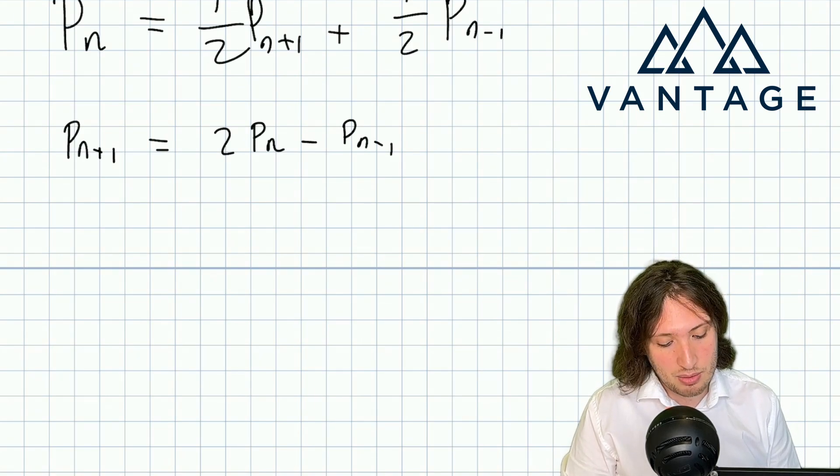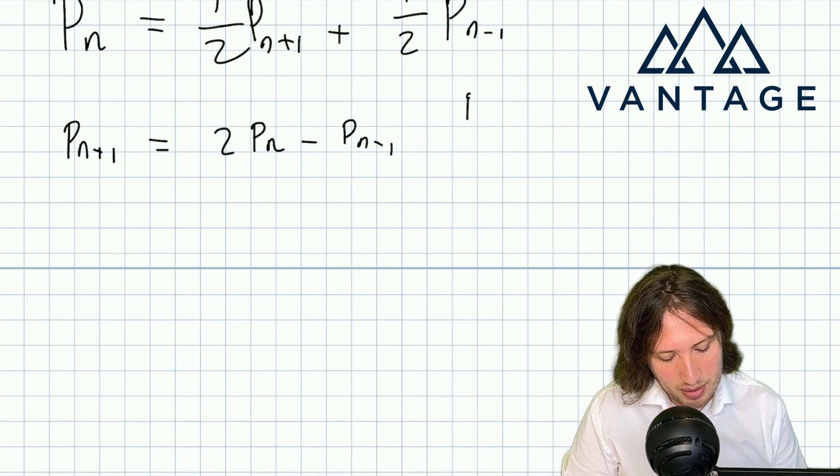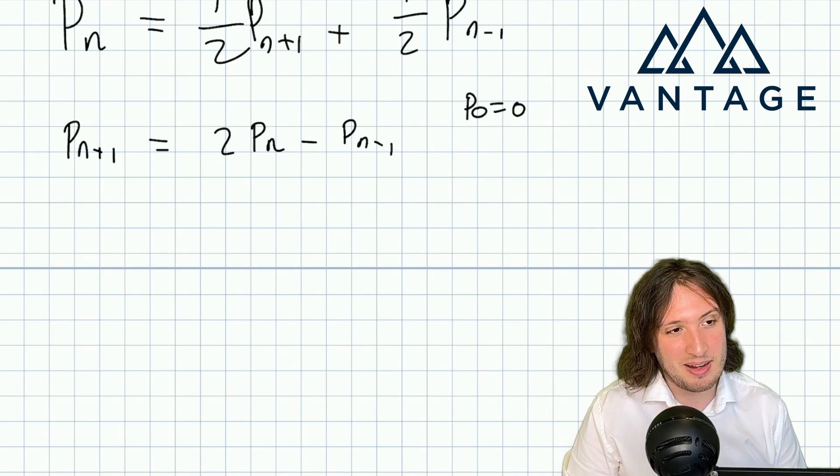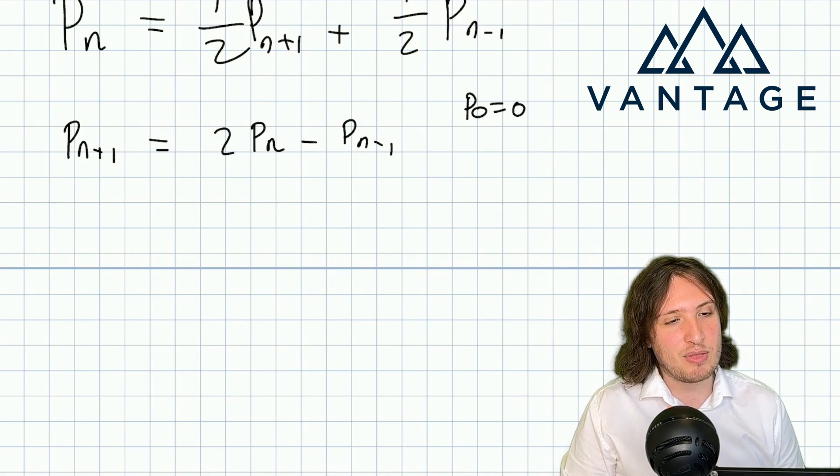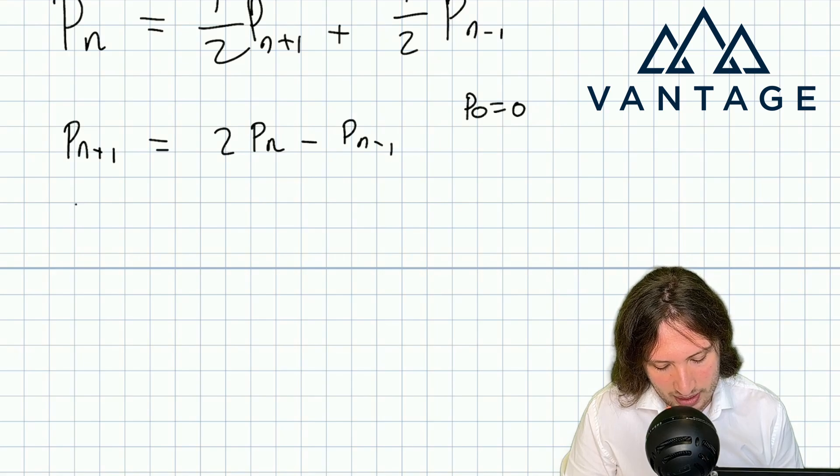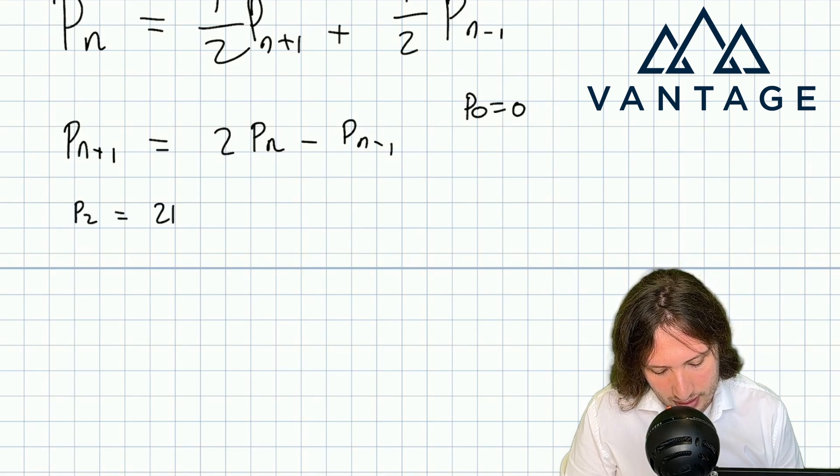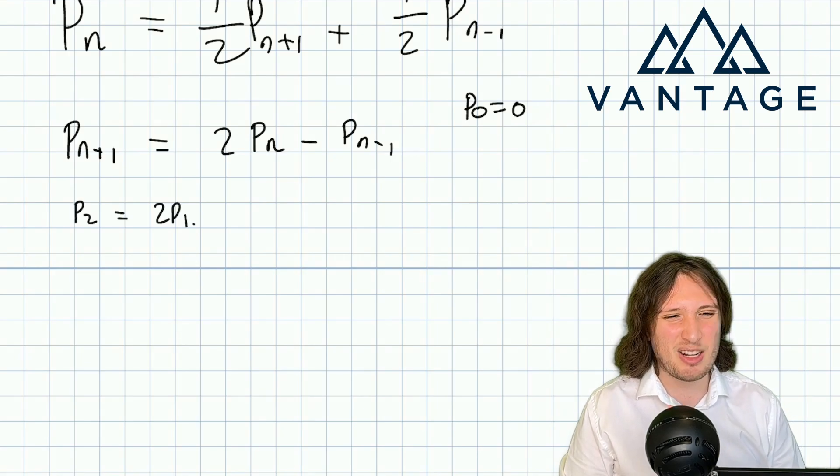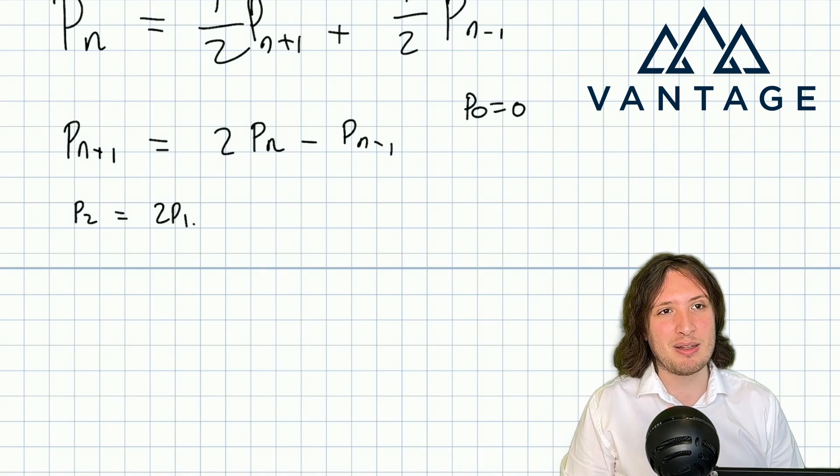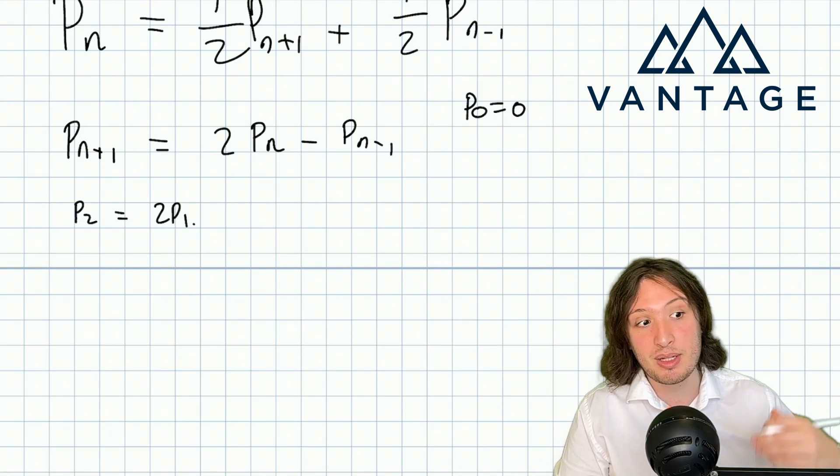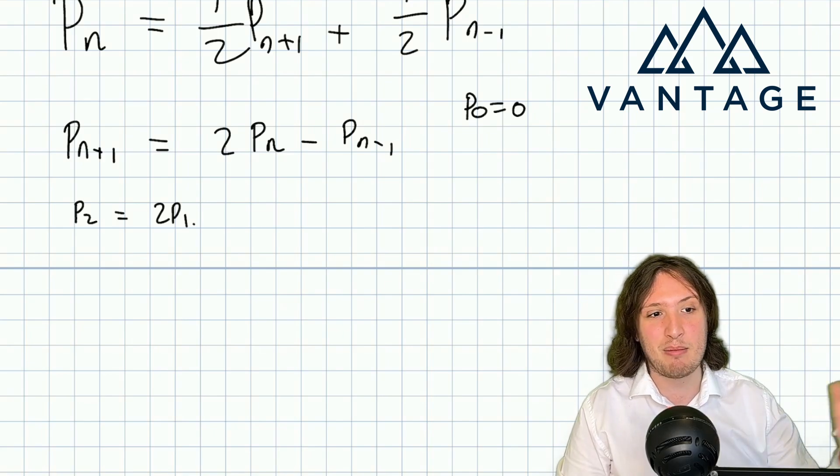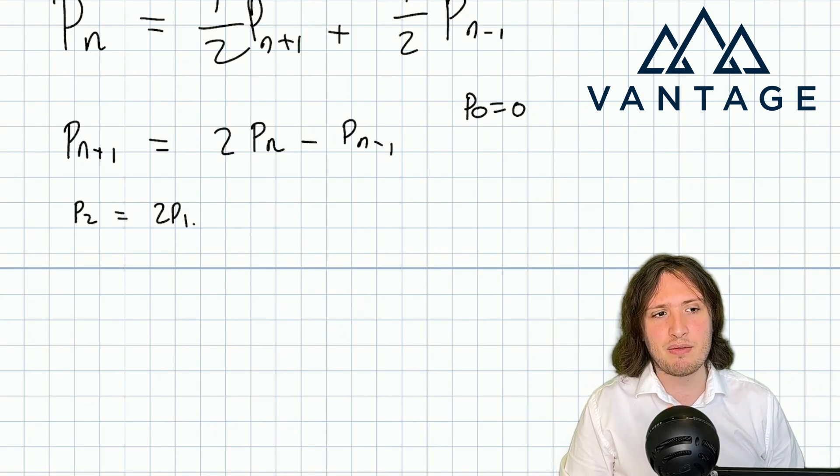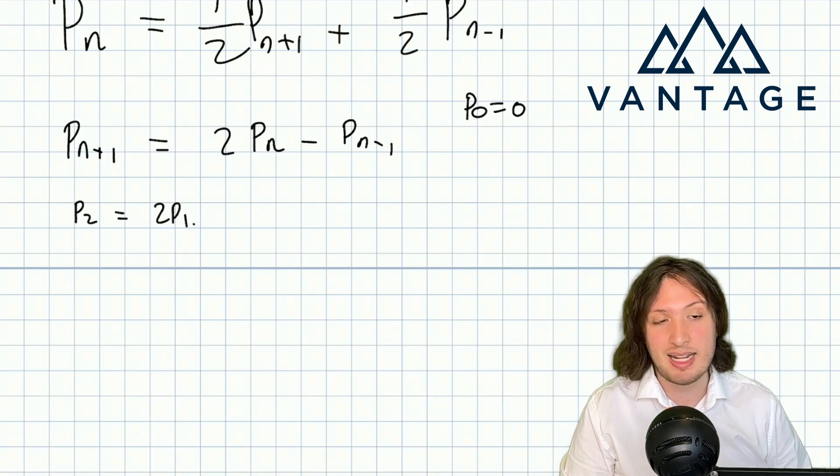I guess the first thing I can really plug in is n equals 1. Well, I know that P_0 is zero because if Alice has currently got no points she's already lost. So I can plug in n equals 1. If I plug in n equals 1, I'll see that P_2 is 2P_1. Now I don't know what P_1 is yet. Even P_1 is a bit complicated because even if Alice only starts with one point, she might gain a bunch of other points before the game ends. So let's leave that as P_1 for now. We'll see if we can figure it out later. Let's try and get everything in terms of P_1.